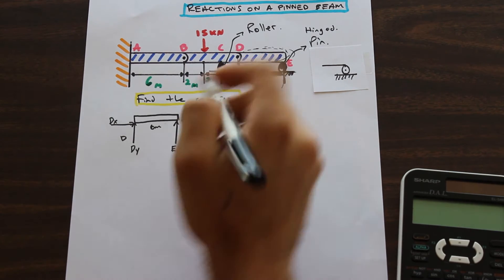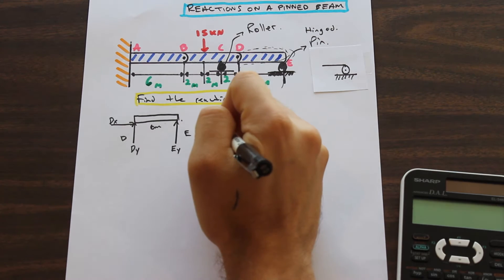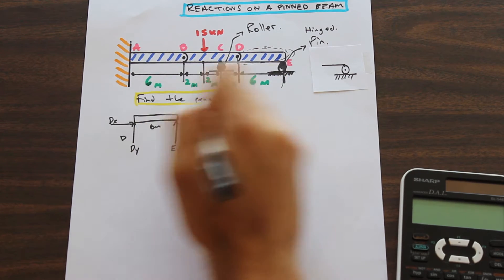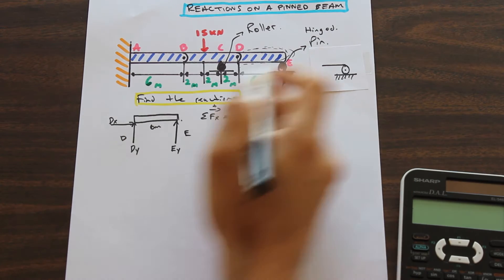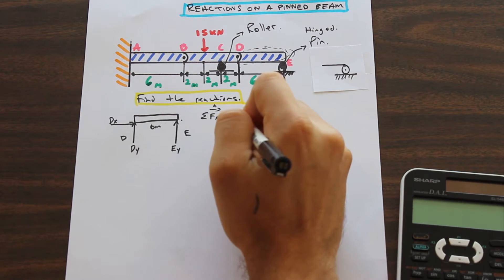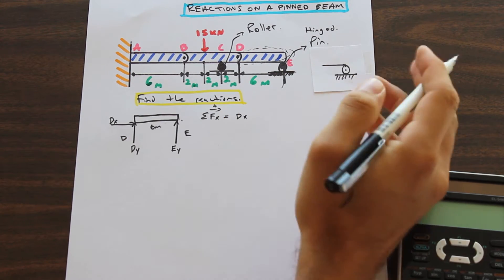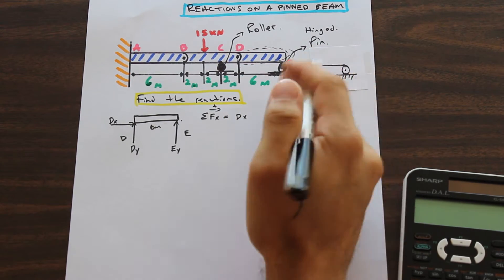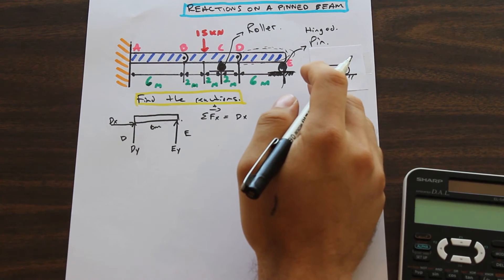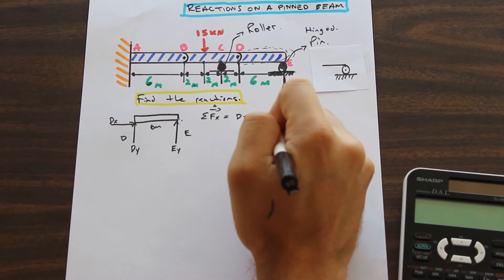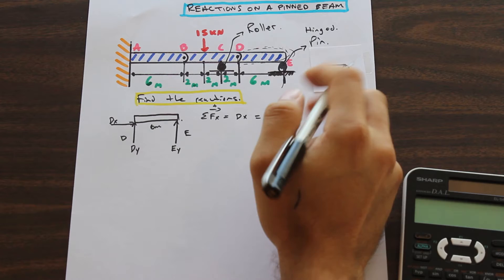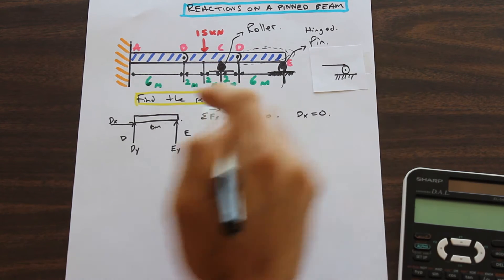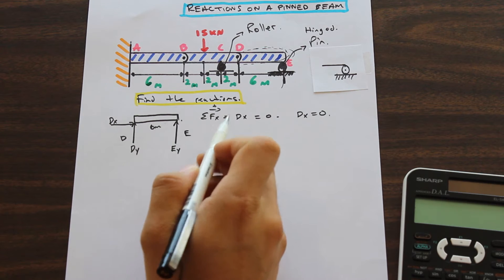By taking the summation of forces in the X direction — say that's positive — we only have one force in the X direction, which is DX. The summation of all forces must equal zero, so we can say that DX is equal to zero. DX is zero. Let's go ahead and move on to DY and EY.